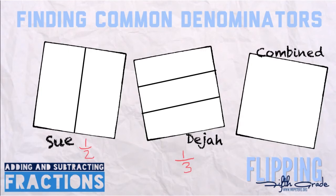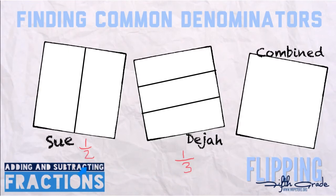So we're looking at the 2 and the 3. What are the multiples of 2? 2, 4, 6, 8, 10, 12, 14, 16, and so on. Multiples of 3: 3, 6, 9, 12 — and we can stop there. The least common multiple is 6.